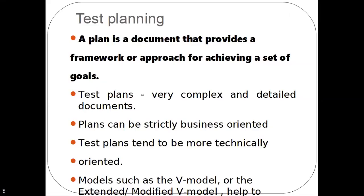First topic is test planning. A plan is a document that provides a framework or an approach in order to get a software product for achieving a set of goals. The plan can have two forms: one is business oriented and the next one is technical oriented. Business oriented means it will be in the form of long-term plans, that is economic growth of an organization. Technical oriented means it is in the form of a specific software product to be developed.